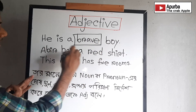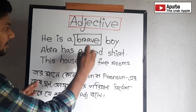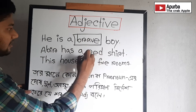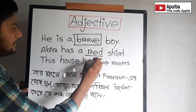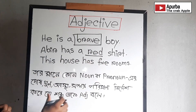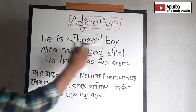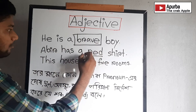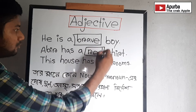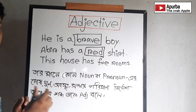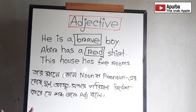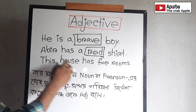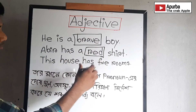Abir has a red shirt. This house has five rooms.